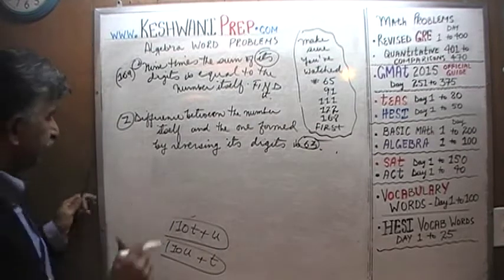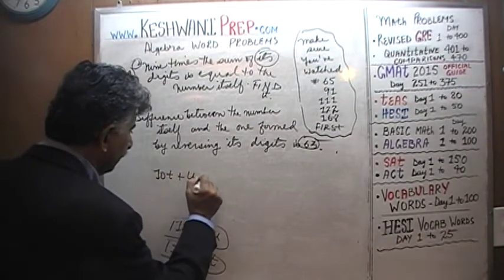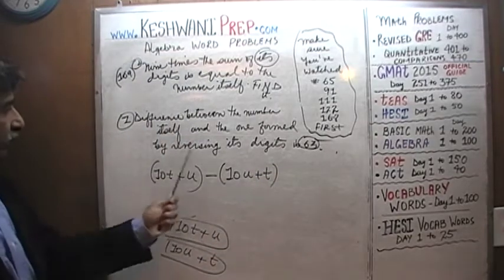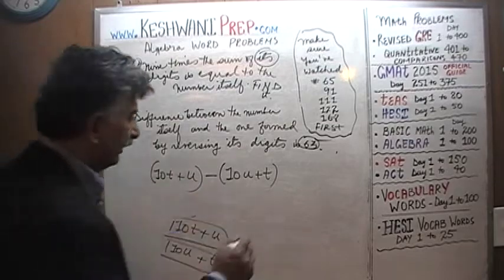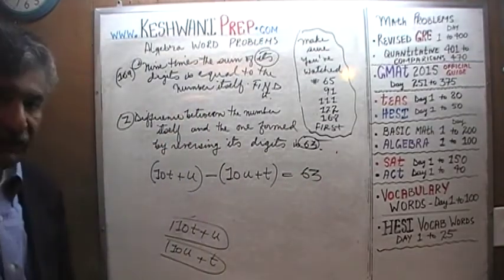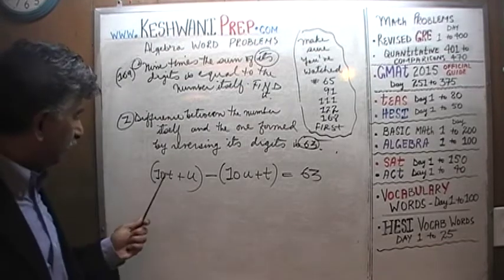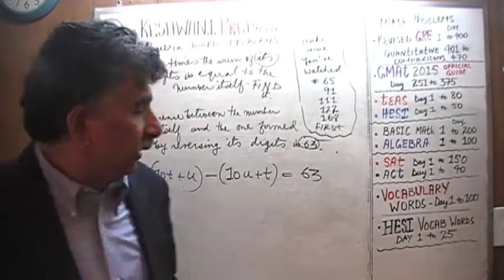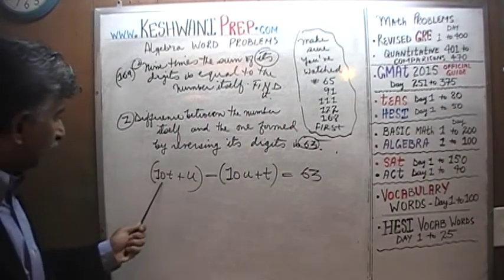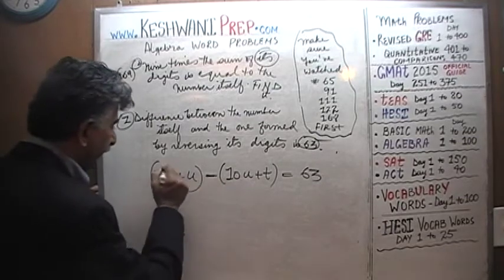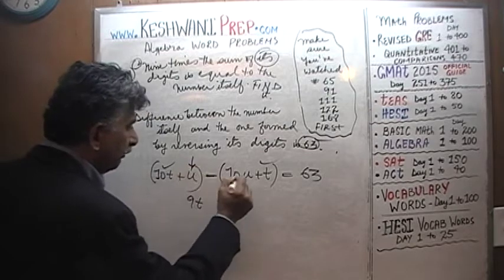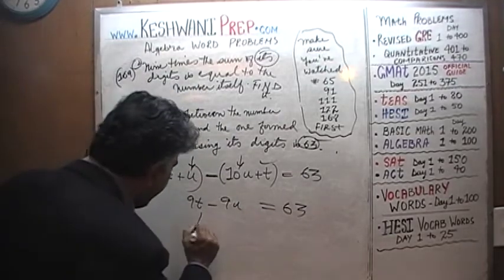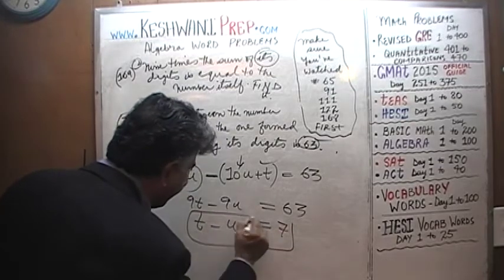The original number is 10t plus u. Minus the reversed number, 10u plus t, equals 63. This is our first equation. But that's not enough — we have two unknowns, t and u, and only one equation. We need two independent equations. Working it out: 10t minus t is 9t, and u minus 10u is negative 9u, so 9t minus 9u equals 63. Dividing by 9 gives us t minus u equals 7.